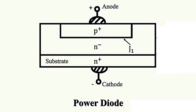Now, the power diode is different in structure from the signal diode because it is required to be suitable for high voltage and high current applications. If the semiconductor has a lightly doped layer on one side, then it requires a large breakdown voltage, which is applicable in the power diode. It consists of a heavily doped N-plus substrate diffused into a lightly doped N-minus layer to form the anode of the power diode. This is the main difference between the power diode and signal diode.